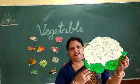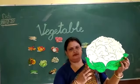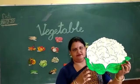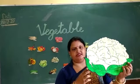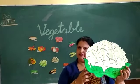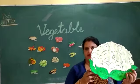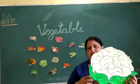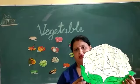Which vegetable is this? Cauliflower. Which vegetable is this? Cauliflower. It comes in winter season — ye winter mein aati hai.